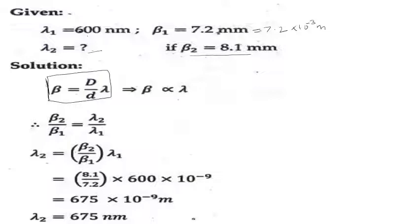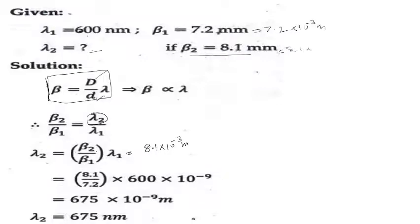The fringe bandwidth formula is beta = lambda × D / d, where D is the distance to the screen and d is the slit separation. Since the apparatus is the same, D and d are constant. Therefore lambda 2 / lambda 1 = beta 2 / beta 1. Setting up: 8.1 × 10⁻³ divided by 7.2 × 10⁻³ gives the ratio, and lambda 2 = 685 nanometers approximately.